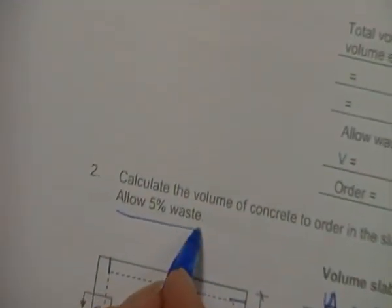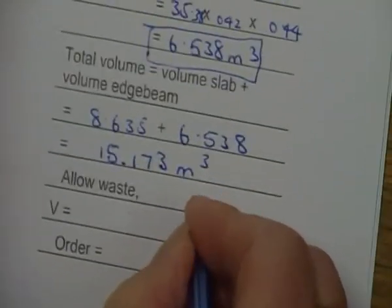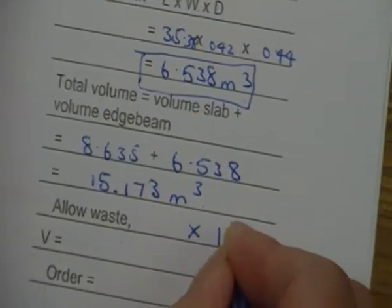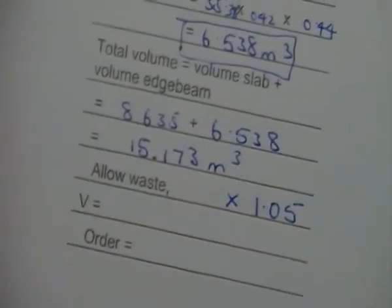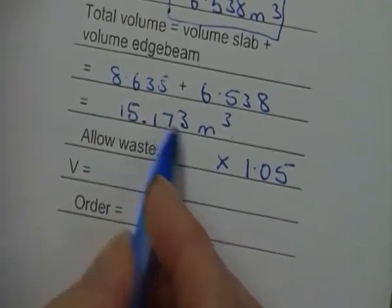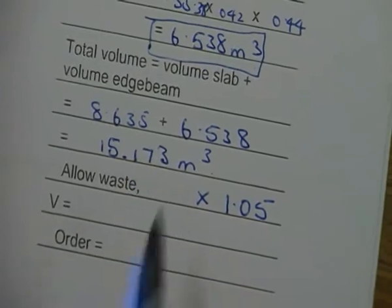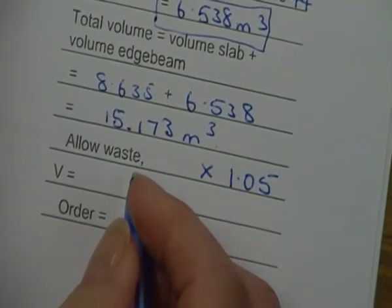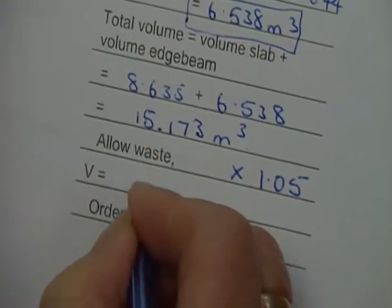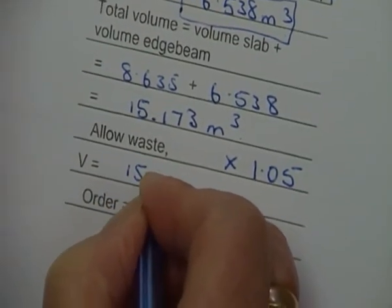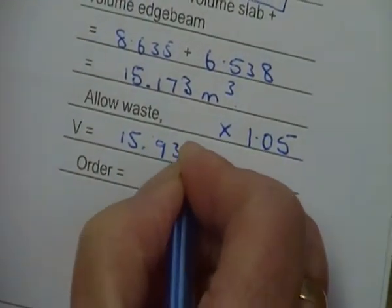Now that is not my final answer. You will always be asked to add waste, so always go back to your question when you think you've answered it. We're adding 5% waste, so we're going to times that by 1.05. One is the whole amount and the 5% is added on, so that's the quick way to do it. And my volume answer is 15.932 meters cubed for concrete.